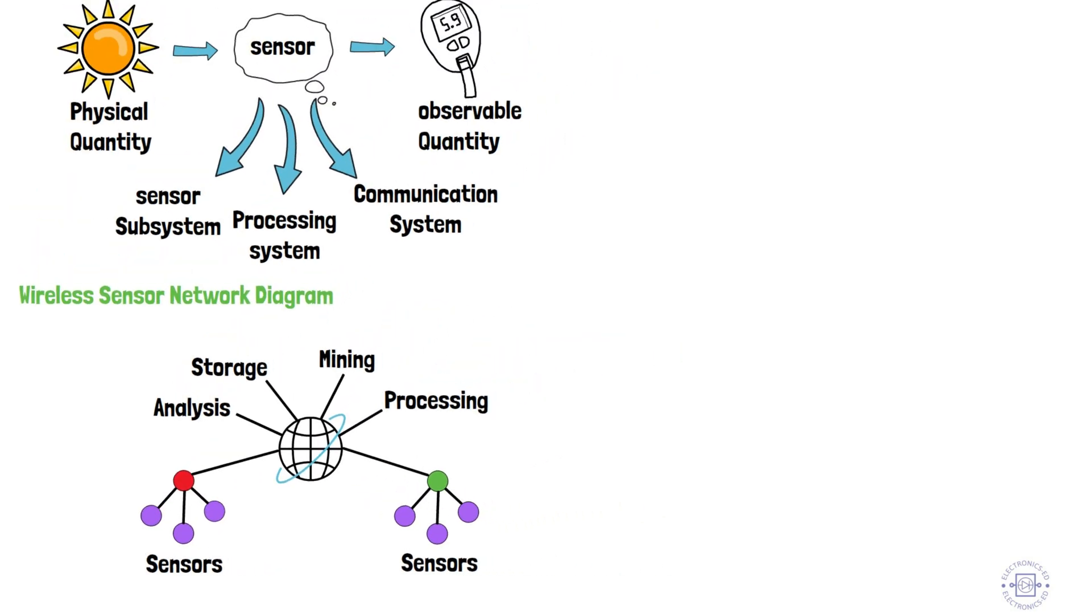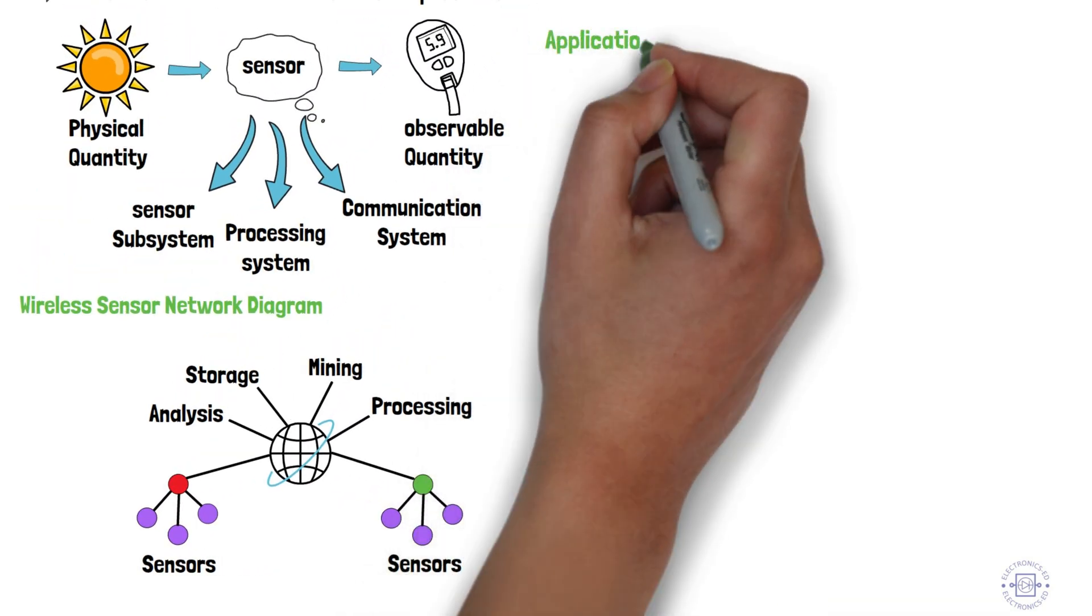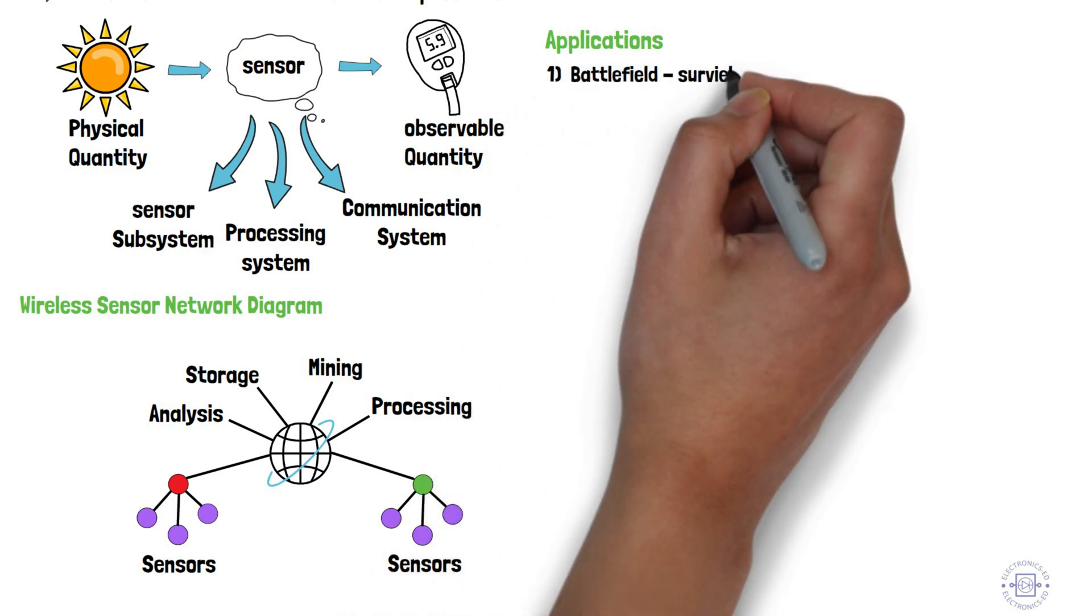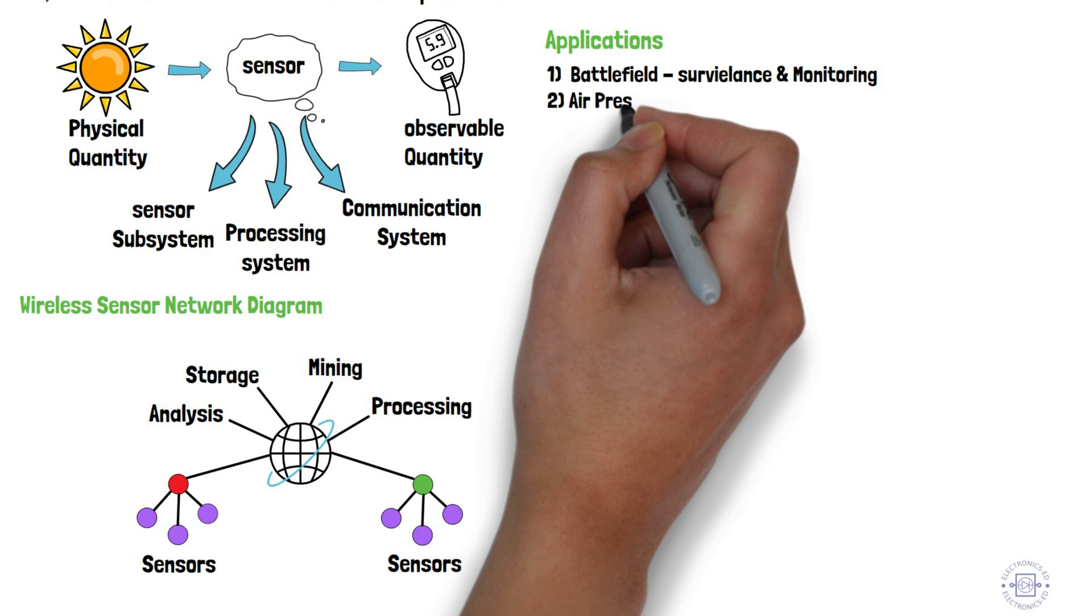Let's see the applications of wireless sensor networks: battlefield for surveillance and monitoring, monitoring air pressure, temperature, and humidity.